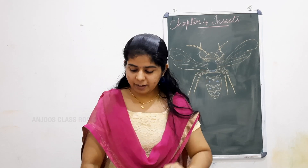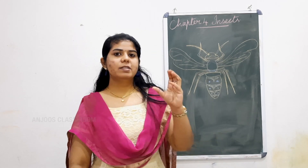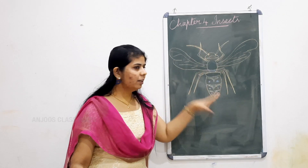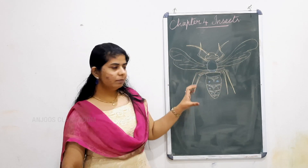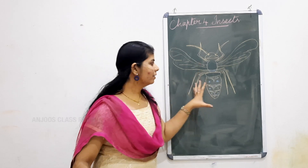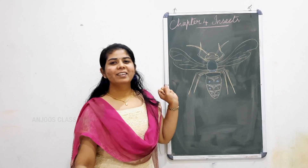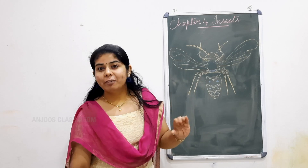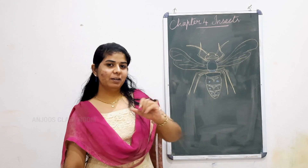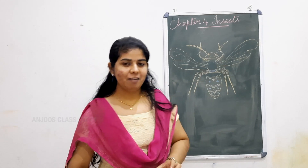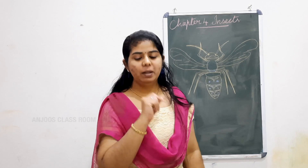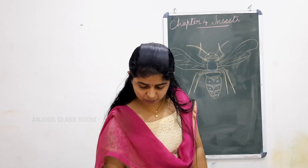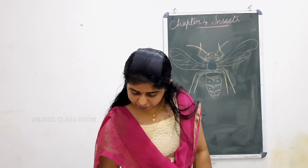So that is one. Now let's start the class. You can see a picture here — an insect is drawn. This is an insect. So we are going to see the different body parts. Like the bird's body parts you have learned, you are going to see the body parts of an insect. That is what you are going to see in the first part.